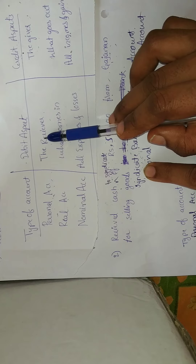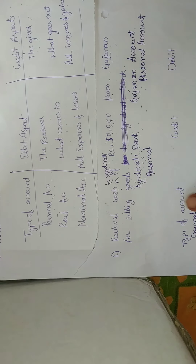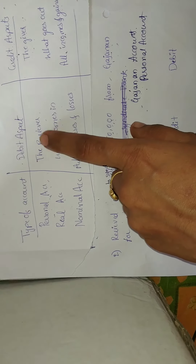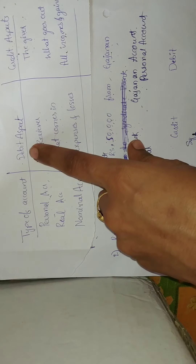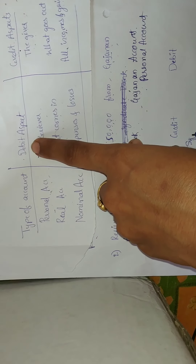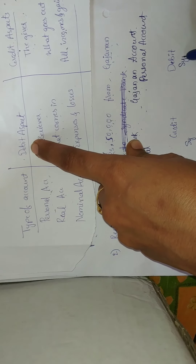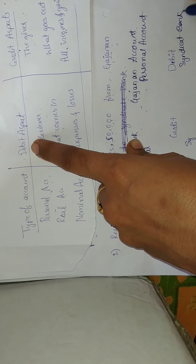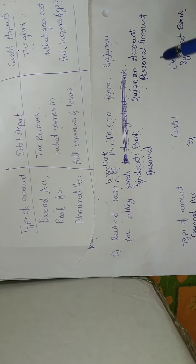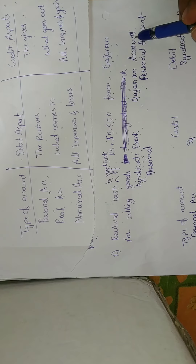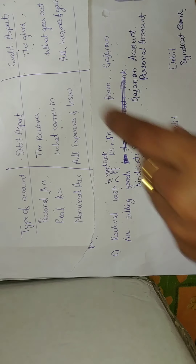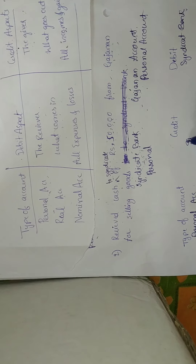Syndicate Bank is receiving the 50,000 amount, so Syndicate Bank is the receiver — the receiver comes under debit. Gajana is paying to Syndicate Bank, so Gajana is the giver — the giver comes under credit. So Syndicate Bank account is debited and Gajana account is credited.